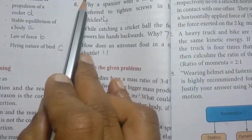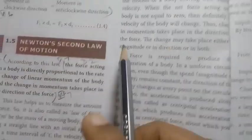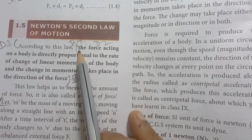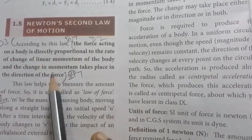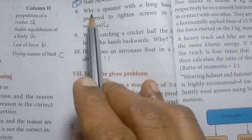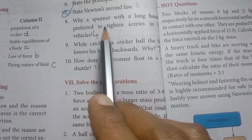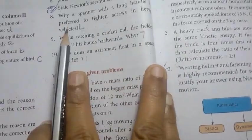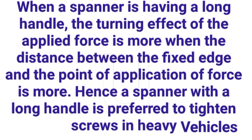Seventh: state Newton's second law — the force acting on a body is directly proportional to the rate of change of momentum and acts in the direction of force. Eighth: why is a spanner with a long handle preferred to tighten screws in heavy vehicles? When a spanner has a long handle, the turning effect of the applied force is greater when the distance between the fixed edge and the point of application of force is more. Hence, a spanner with a long handle is preferred.